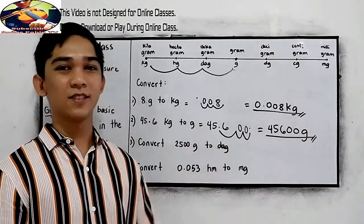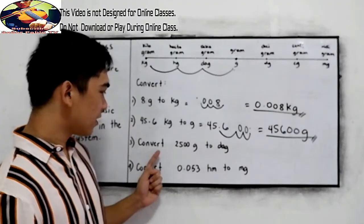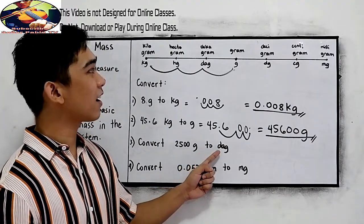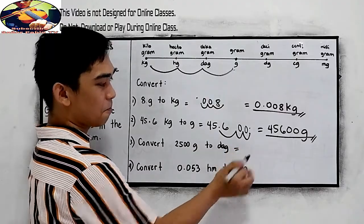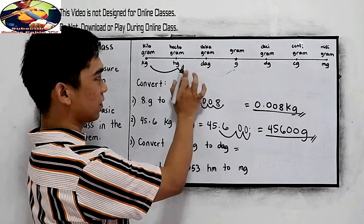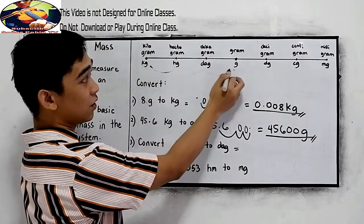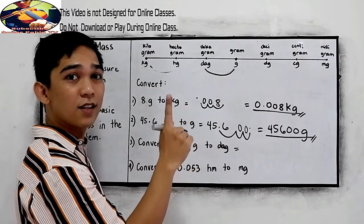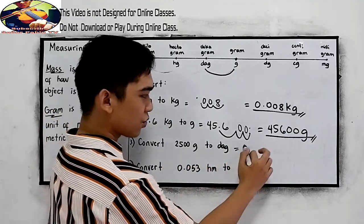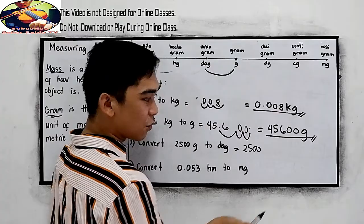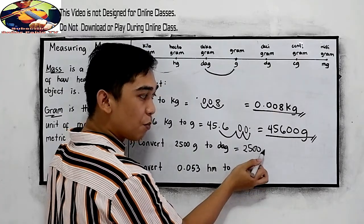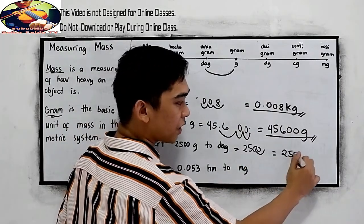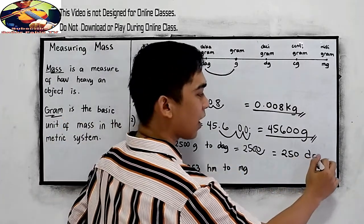Next, convert 2,500 grams to decagram. Grams to decagram. We need to move one to the left. So, 2,500. We know that the decimal point is located here. Move one to the left. So, our answer will be 250 decagram.